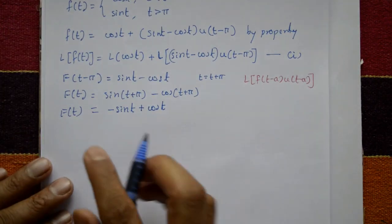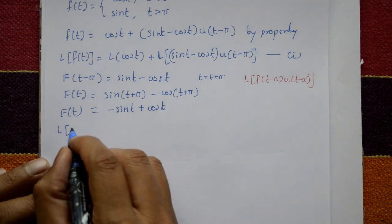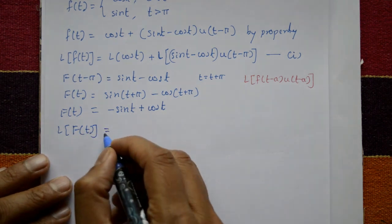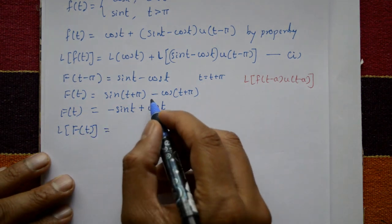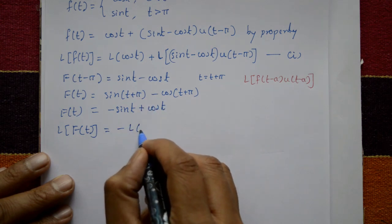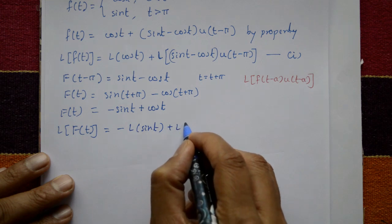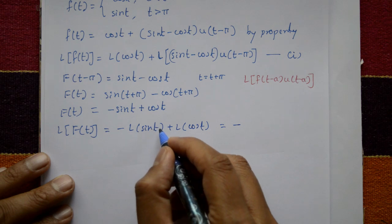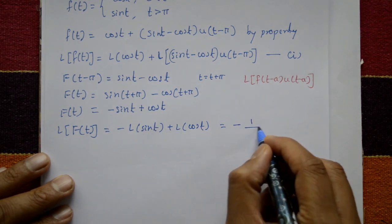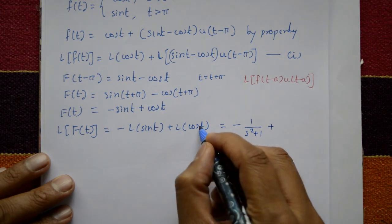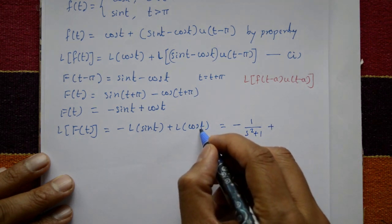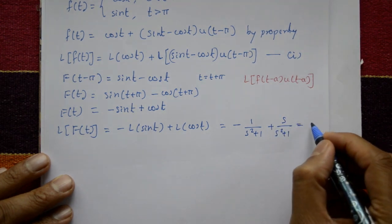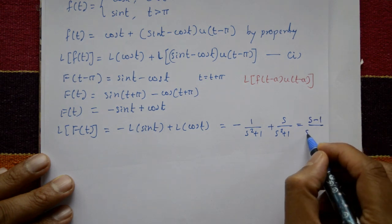L{f(t)} gives −L{sin(t)} + L{cos(t)}. Using standard results: L{sin(t)} = 1/(s² + 1) and L{cos(t)} = s/(s² + 1). Since both have the same denominator, F̄(s) = (s − 1)/(s² + 1).